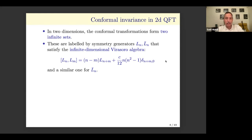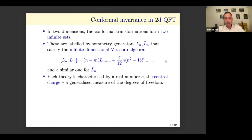There's another Virasoro algebra for L-bar, and the Ls and L-bars just commute with each other. Each conformal field theory therefore has these two Virasoro algebras. This number C is called the central charge — a real number, supposed to be positive for unitary theories. It's a generalized measure of degrees of freedom. In simple CFTs where we know how to count degrees of freedom, such as free bosons or free fermions, C is proportional to the number of free bosons or fermions.